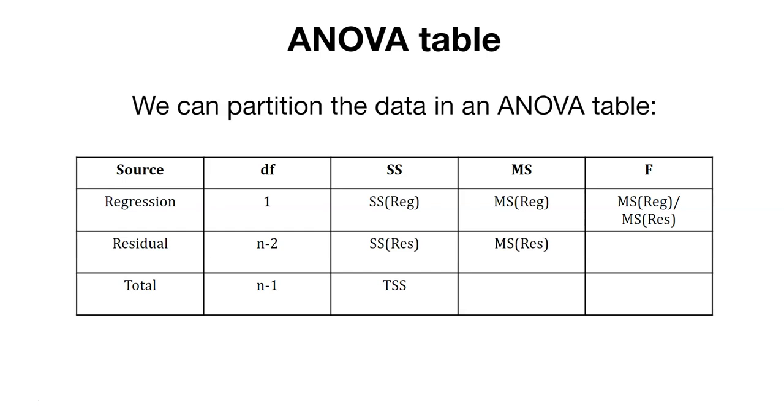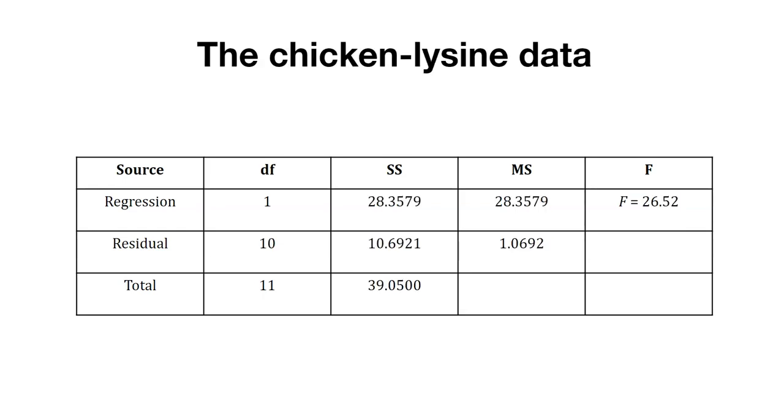This is how we could write out, for example, with the chicken and lysine data, what the data look like. Here it is for the chicken and lysine data. We have one degree of freedom for the regression, 10 degrees of freedom for the residual, giving us a total of 11 degrees of freedom. Remember, we had 12 observations in the data set. We can calculate the sums of squares, we can calculate the mean squares, and then we have a value for F. Our value for F equals 26.52.